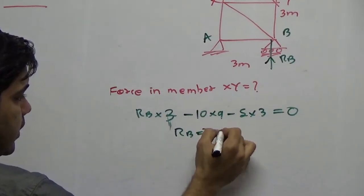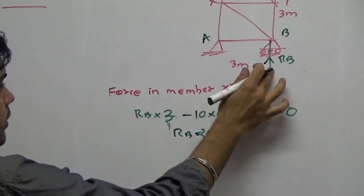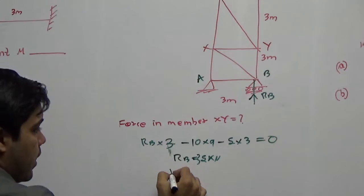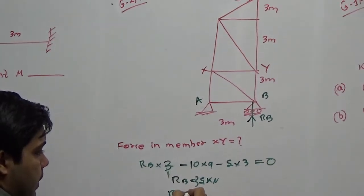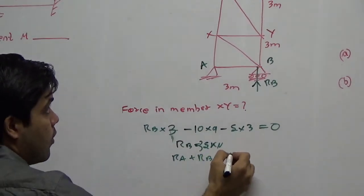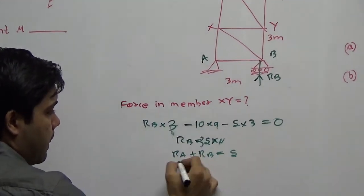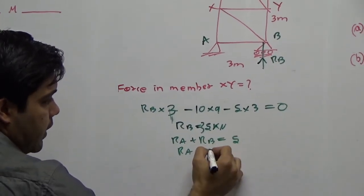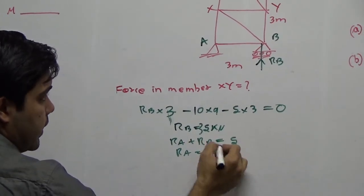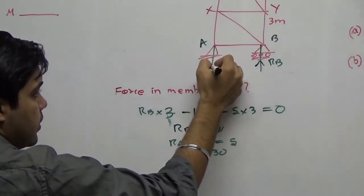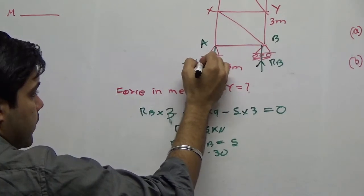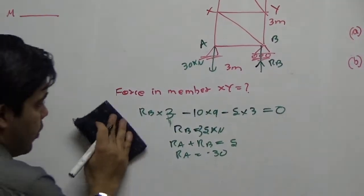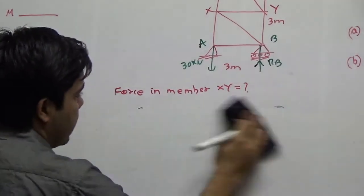Since rB is 35 kN and the total vertical load is 5 kN, rA + rB should equal 5. Therefore, rA = 5 − 35 = −30 kN, meaning rA is 30 kN downward. Now I have obtained both reactions.